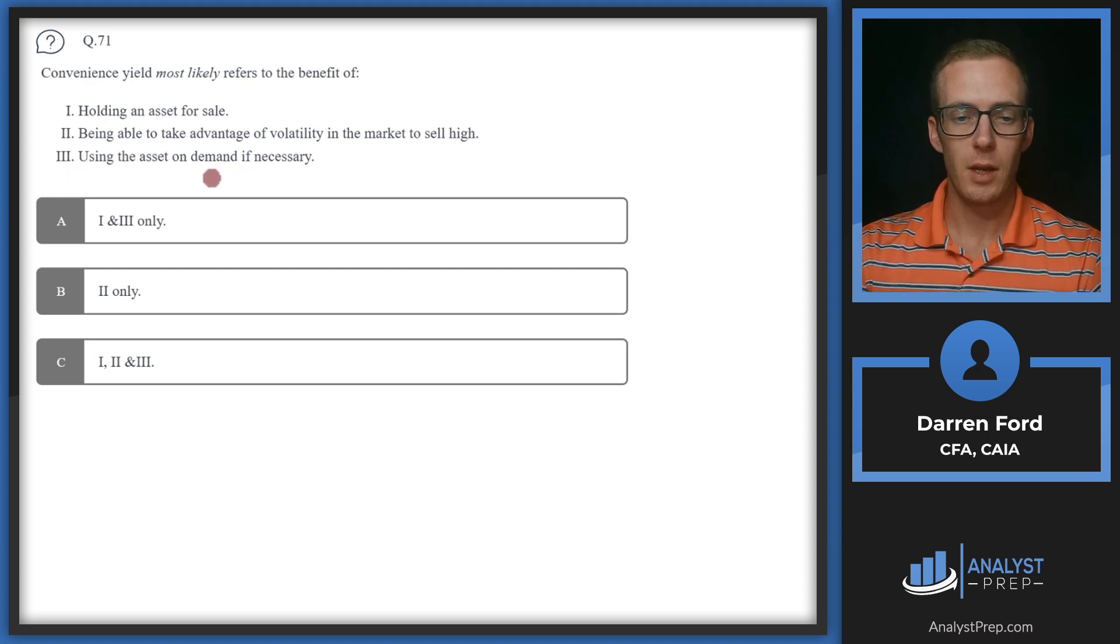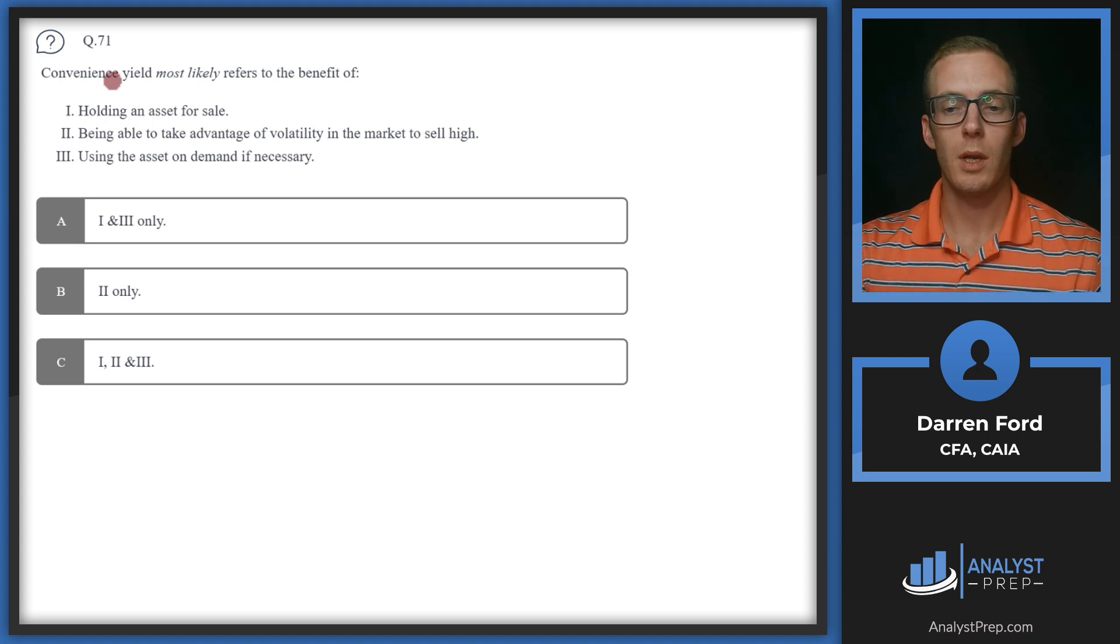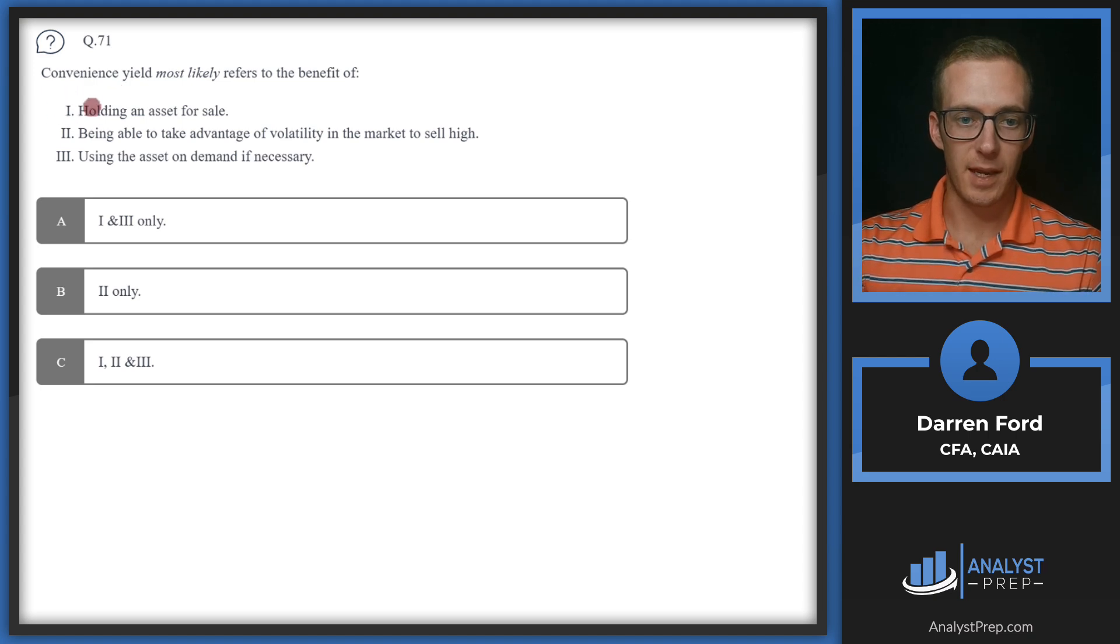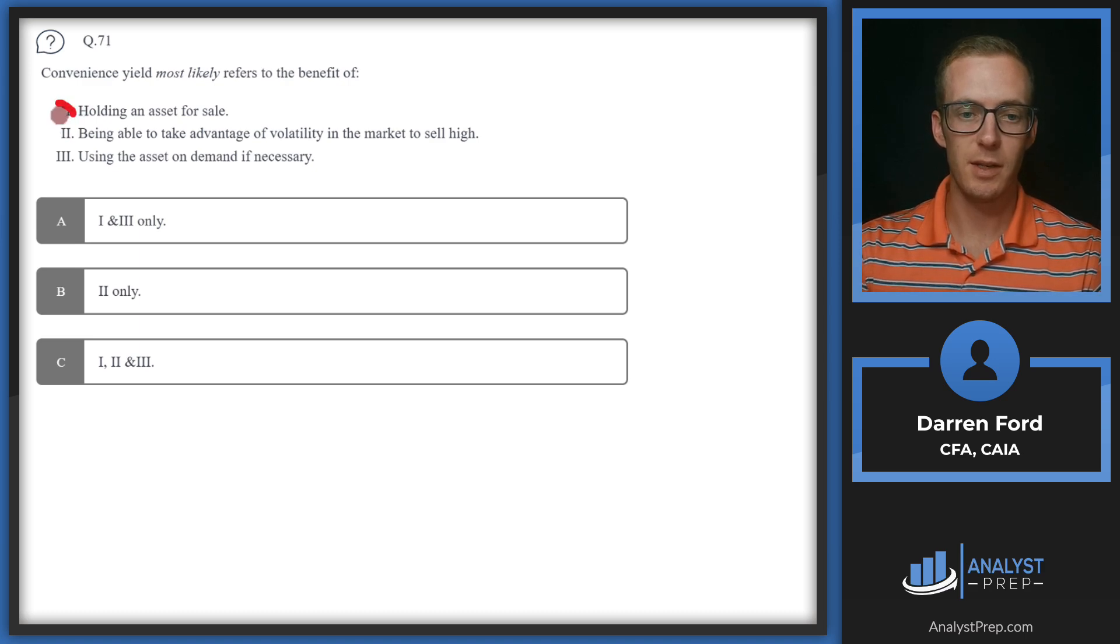Convenience yield generally refers to real assets or commodities. If we hold that commodity physically, we can potentially reap these benefits. For example, a copper mining company holding copper on their balance sheet can hold the asset for sale, use volatility in the market to sell it at a higher price, or use the asset on demand to produce something and create value. So we'll go with C, all three of these are benefits of convenience yield.